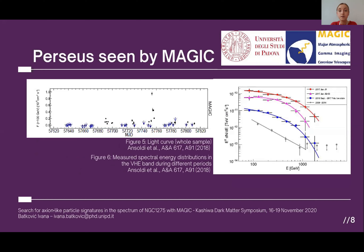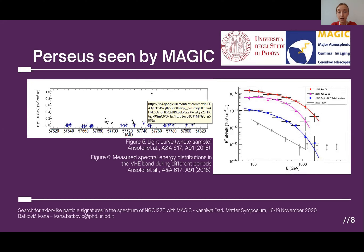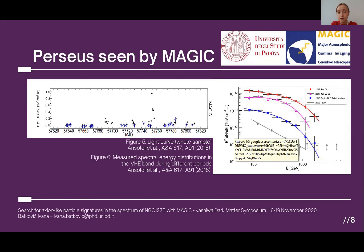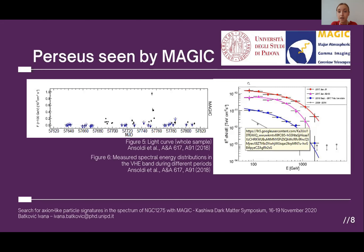This study was also previously done within our collaboration in 2018 on a different dataset of NGC 1275. Figure five shows the light curve of the whole observational sample of NGC 1275. One particular point represents the flaring state, which we also decided to probe in our ALP search. Figure six shows the spectral energy distribution divided by different source states. The state we use is represented by the red line — the flaring state of January 1st, 2017.